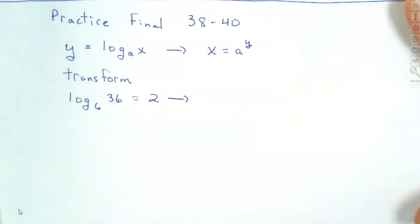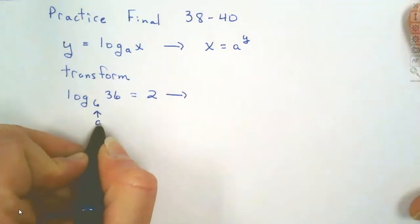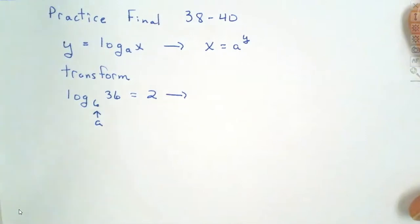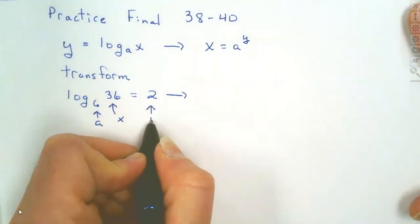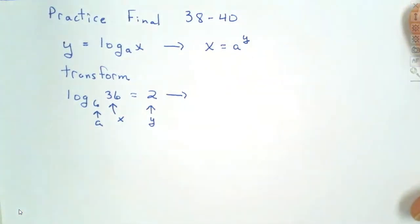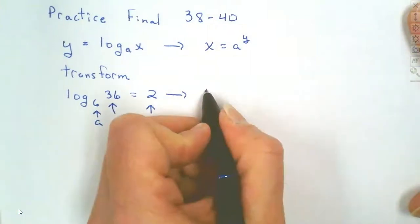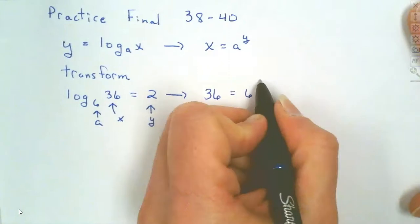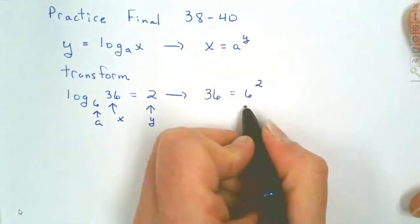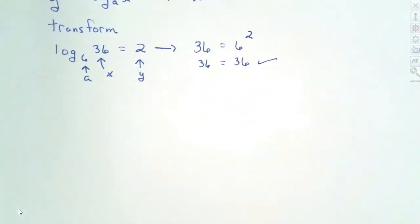Right now it's written as a logarithm. How would we transform this into an exponential? We look at our formula. The base is your a — in our case, that 6 is going to be our a. The number inside the logarithm is your x, and the number on the end is the y. So as an exponential, x is 36, so that's 36 equals a, which is 6, to the y, which is 2. That's true because 6 squared is 36. So you can transform a logarithm into an exponential or vice versa.